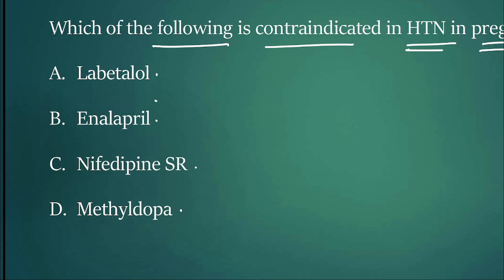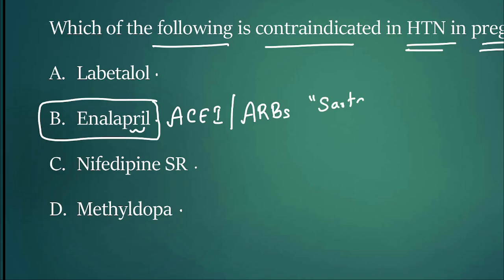If your answer is B, enalapril, then you are right. Enalapril belongs to ACE inhibitors - anything ending with 'pril' is an ACE inhibitor. ACE inhibitors or ARBs, which end with 'sartans', are contraindicated in pregnancy because they are teratogenic and can cause renal agenesis, particularly in second and third trimester.